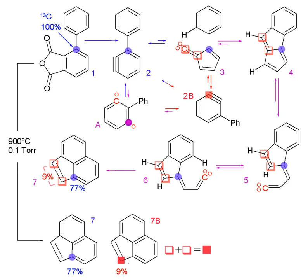An isotopic tracer, also known as an isotopic marker or isotopic label, is used in chemistry and biochemistry to help understand chemical reactions and interactions. In this technique, one or more atoms of the molecule of interest is substituted for an atom of the same chemical element, but of a different isotope, like a radioactive isotope used in radioactive tracing.